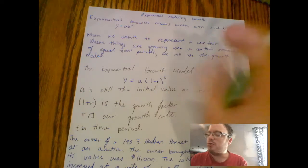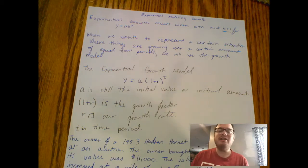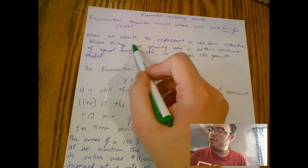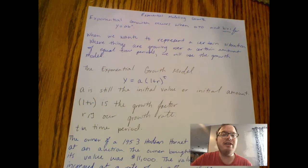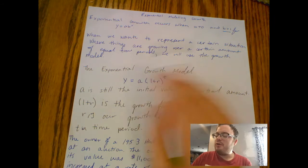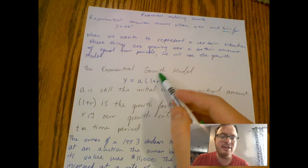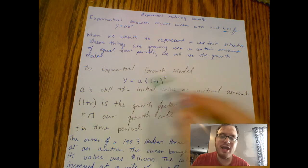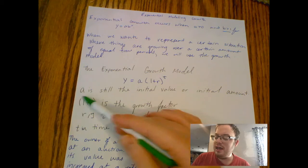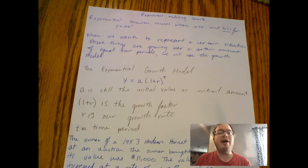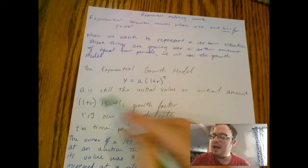Exponential modeling and exponential growth occurs when a is positive and b is greater than one in y equals ab to the x. However, a lot of times in life we like to represent exponential functions in terms of time. When we want to represent a certain situation where things are growing over a certain amount of equal time periods, increasing in equal increments, we will use the following growth model. The exponential growth model is y equals a times one plus r to the t.